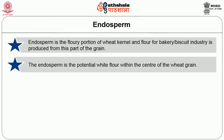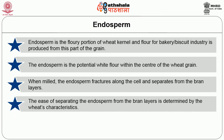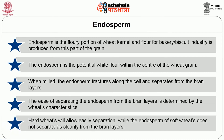The endosperm is the potential white flour within the center of the wheat grain. When milled, the endosperm fractures along the cell and separates from the bran layer. The ease of separating the endosperm from the bran layers is determined by the wheat's characteristics. Hard wheat will allow easy separation while the endosperm of soft wheat does not separate as cleanly from the bran layers.